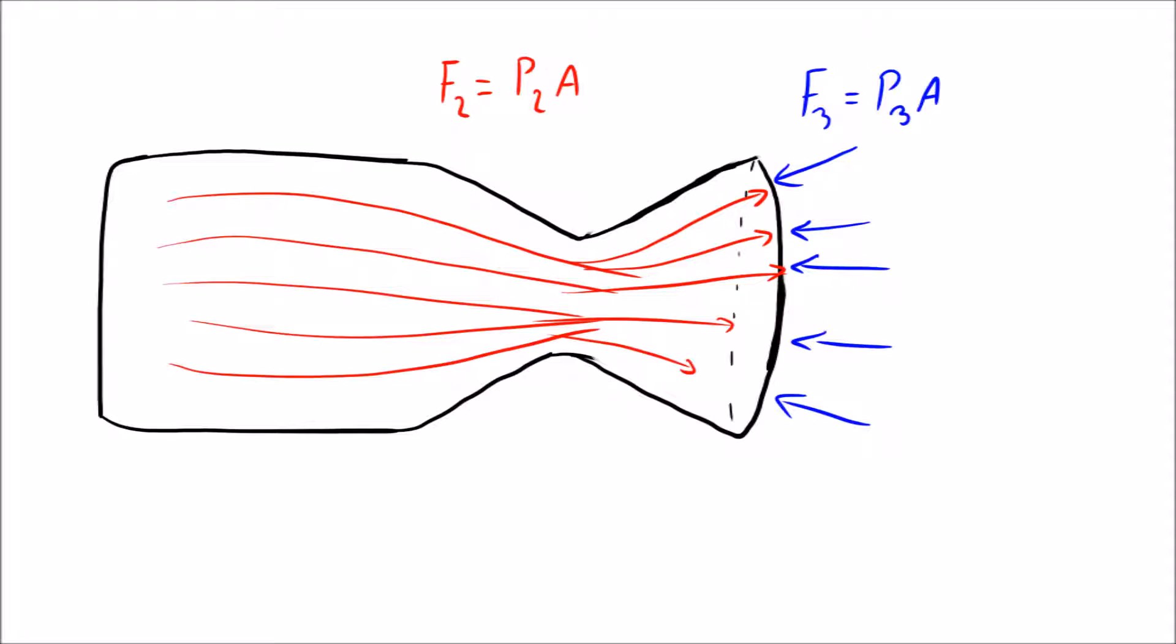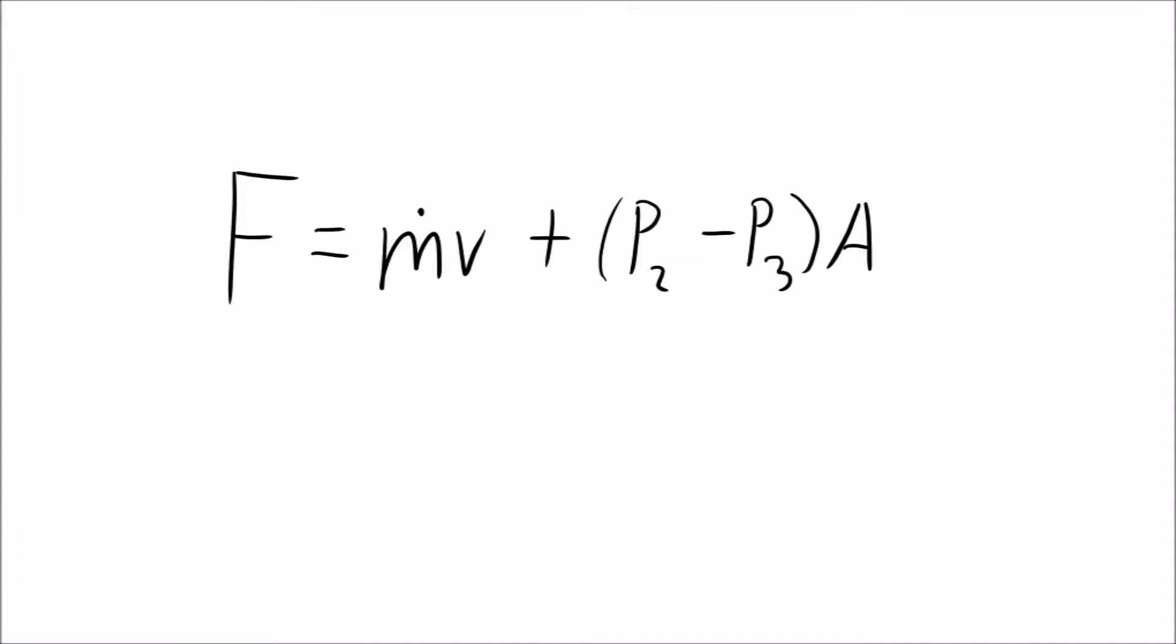We can add these forces to our thrust equation. Since the force due to the air molecules slows down the exhaust molecules, this force is negative. Now we have our complete equation for thrust.